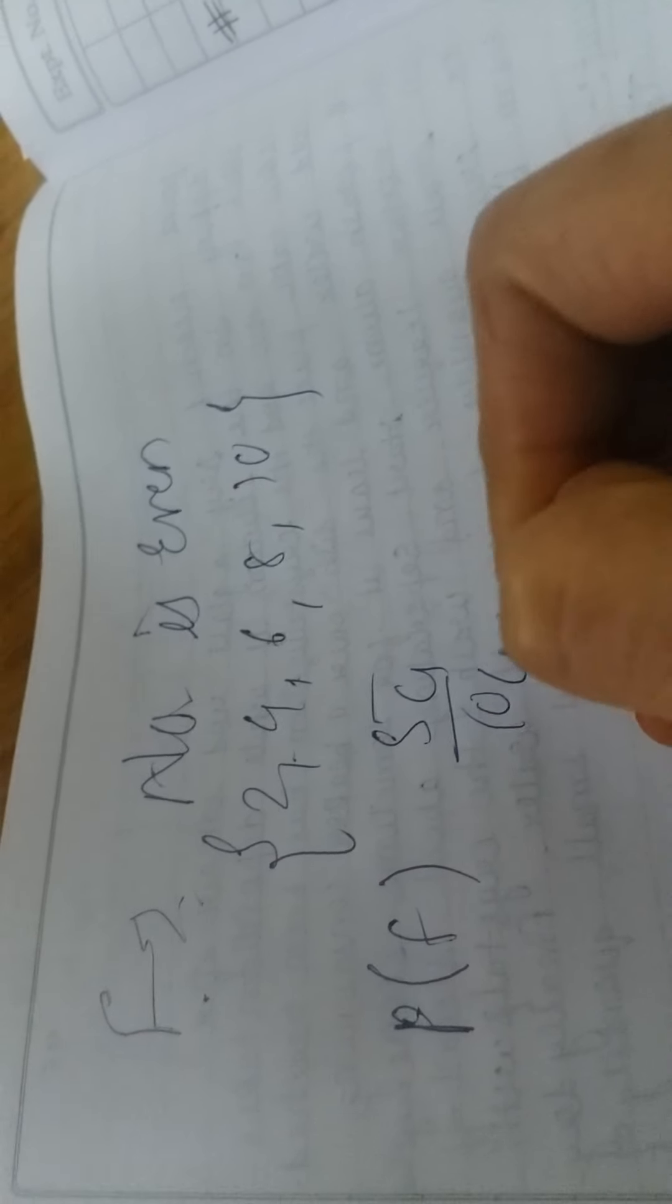Now see F. F condition, what is given? In the second condition, probability that it is an even number. Condition F is that number is even. Now in even number what will you have? 2, 4, 6, 8, 10. Probability of F: 1, 2, 3, 4, 5. 5C1 upon 10C1, 5 by 10.